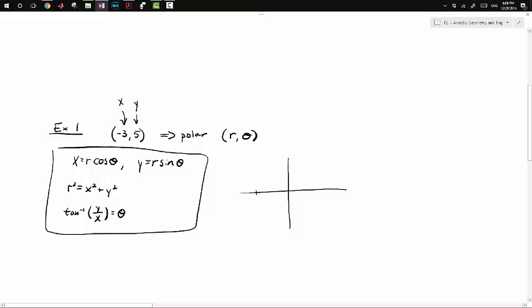So (-3, 5) would put us about here. This is our rectangular coordinate system.